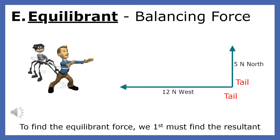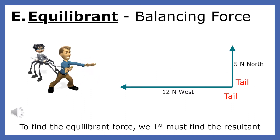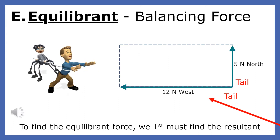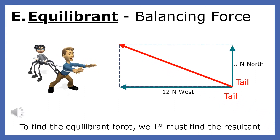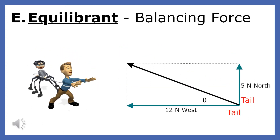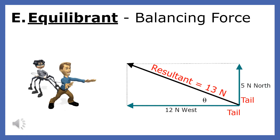These two green forces are connected tail to tail. If we wanted to find the force that would balance these two forces, we would first need to find the resultant. Using the parallelogram method, we can find the resultant by drawing a diagonal line from where the vectors meet to the other side of the parallelogram. The resultant is the single force equivalent to two or more forces — a body would receive the same force if it had the 5 and 12 newton forces pulling on it, or if this resultant acted on it.